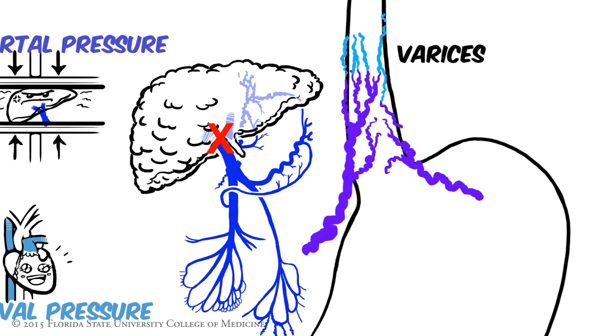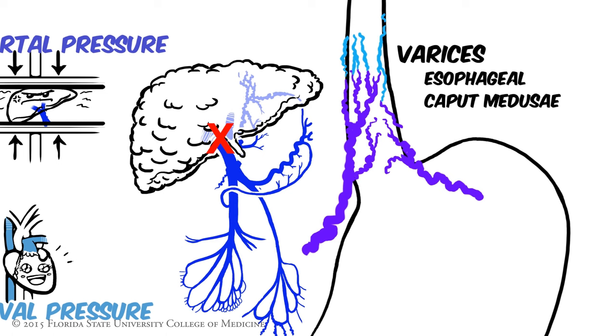In this video, we will discuss three common types of portosystemic anastomosis: esophageal varices, caput medusa, and anorectal varices.